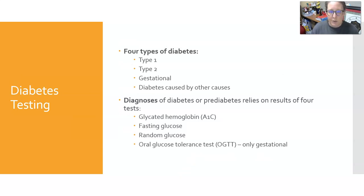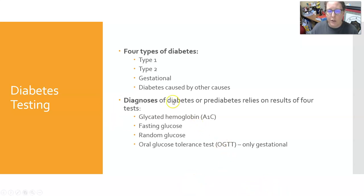There are four types of diabetes: type 1, type 2, gestational, and diabetes caused by other causes. The diagnosis of diabetes or pre-diabetes relies on four tests. First is glycated hemoglobin, or hemoglobin A1c, which is a really good screening test. The other options are a fasting or a random glucose. Together these can point you quickly to type 1 or type 2 diabetes and are the most commonly used.